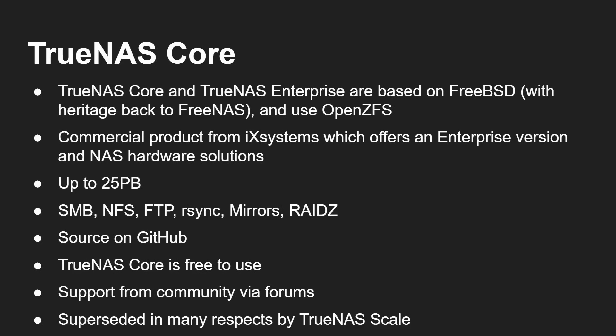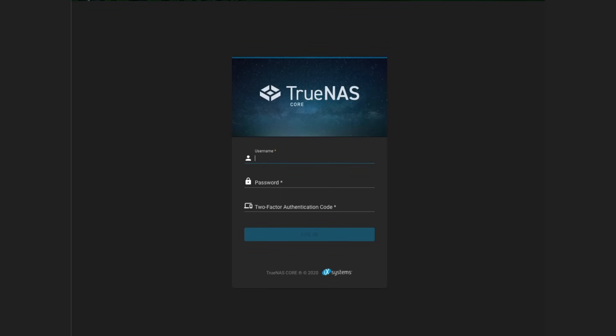TrueNAS Core and TrueNAS Enterprise are based on FreeBSD, with heritage back to FreeNAS. It uses OpenZFS. Commercial products are available from iXsystems offering enterprise versions with full hardware, software, and support. It supports Samba, NFS, FTP, rsync, RAID-Z, mirroring, and so on. The source is on GitHub; TrueNAS Core is free to use, TrueNAS Enterprise has a price. Support comes from the community via forums. However, it's been superseded in many respects by TrueNAS Scale.